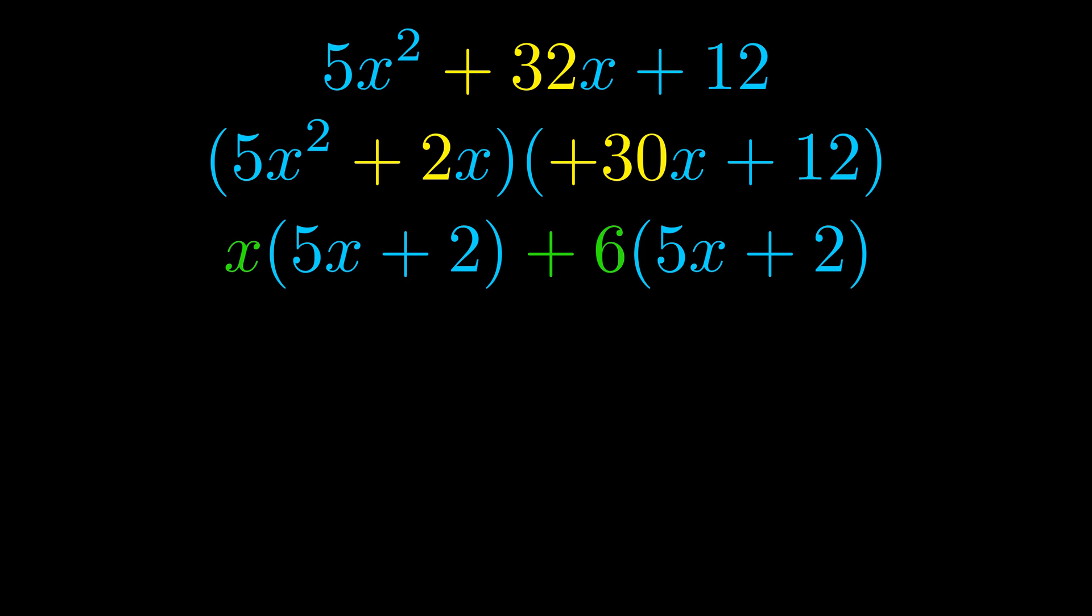Notice also how what remains inside of the parentheses is the same in both cases. The blue values are the same. Those blue values will become one of our factors and we will combine the two green values the GCFs that we pulled out to get the other one. And that is our fully factored equation.